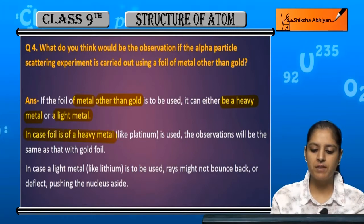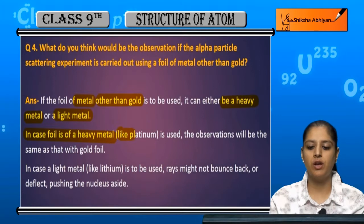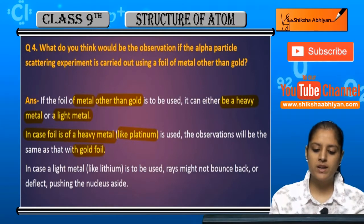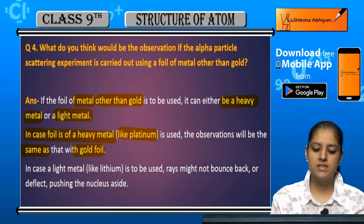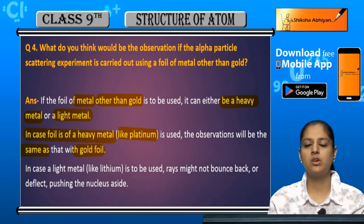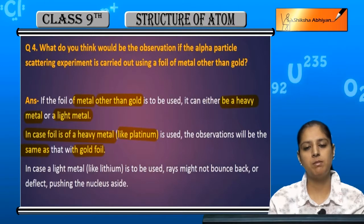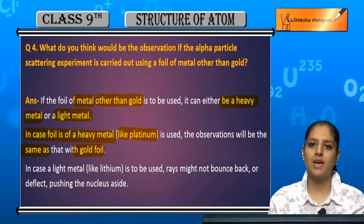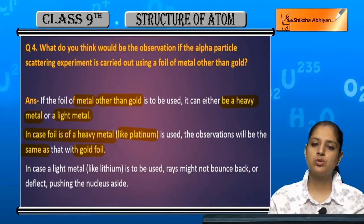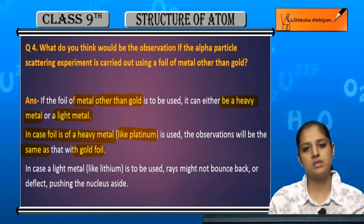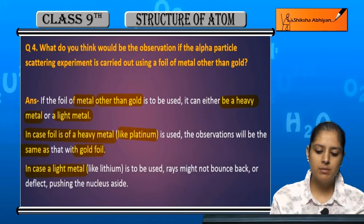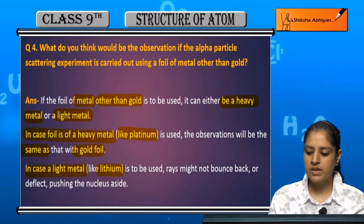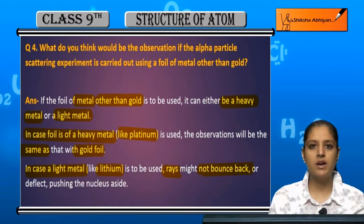In the case where the foil is of a heavy metal — for example, platinum — the observations will be the same as with gold, because gold is also a heavy metal. So if we take platinum or any other heavy metal, the observations will be the same as those obtained with gold.